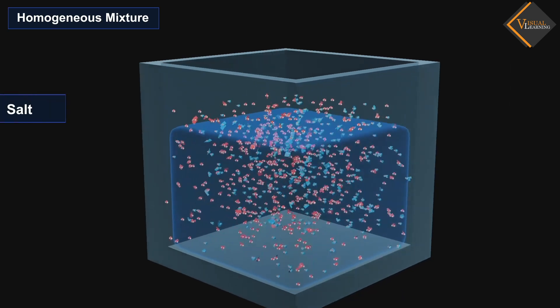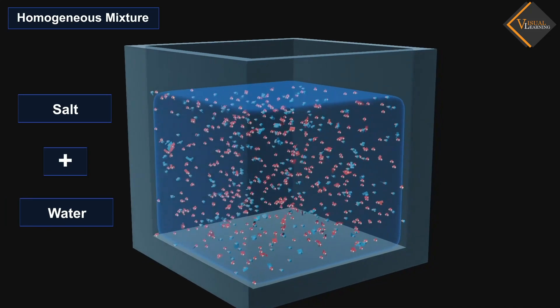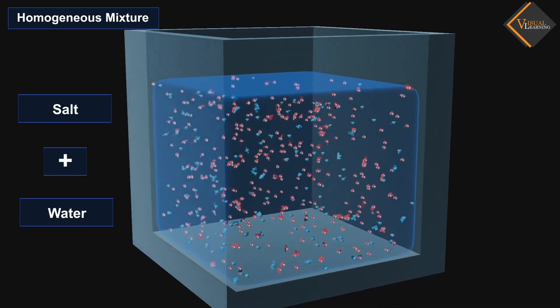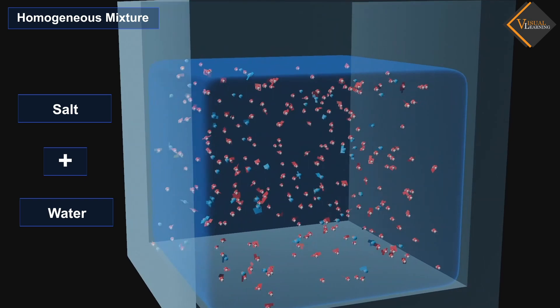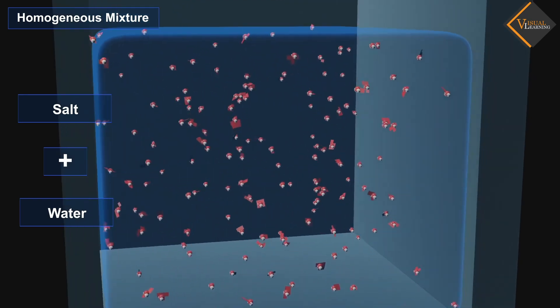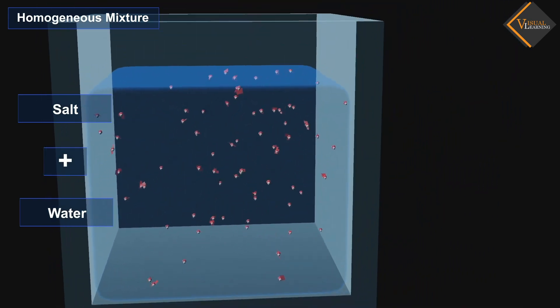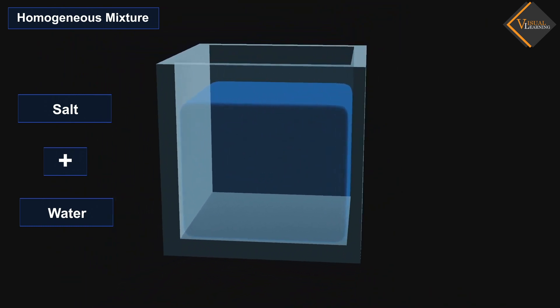For example, salt and water is a homogeneous mixture as the taste of the water will be the same if you take a sip from any portion of water. This shows that salt is uniformly distributed in the mixture.